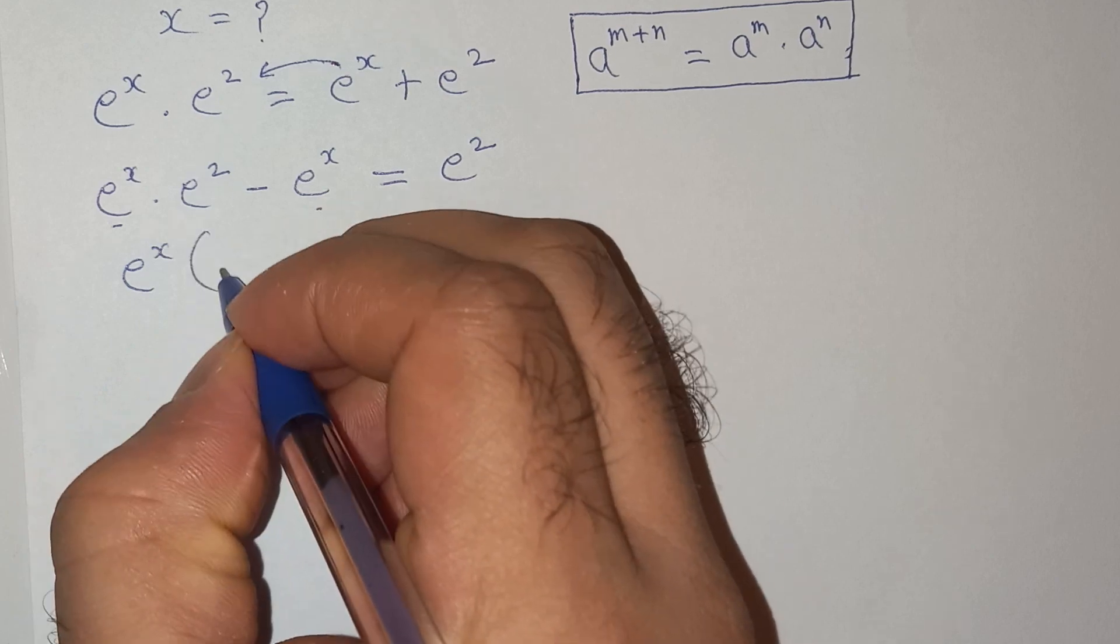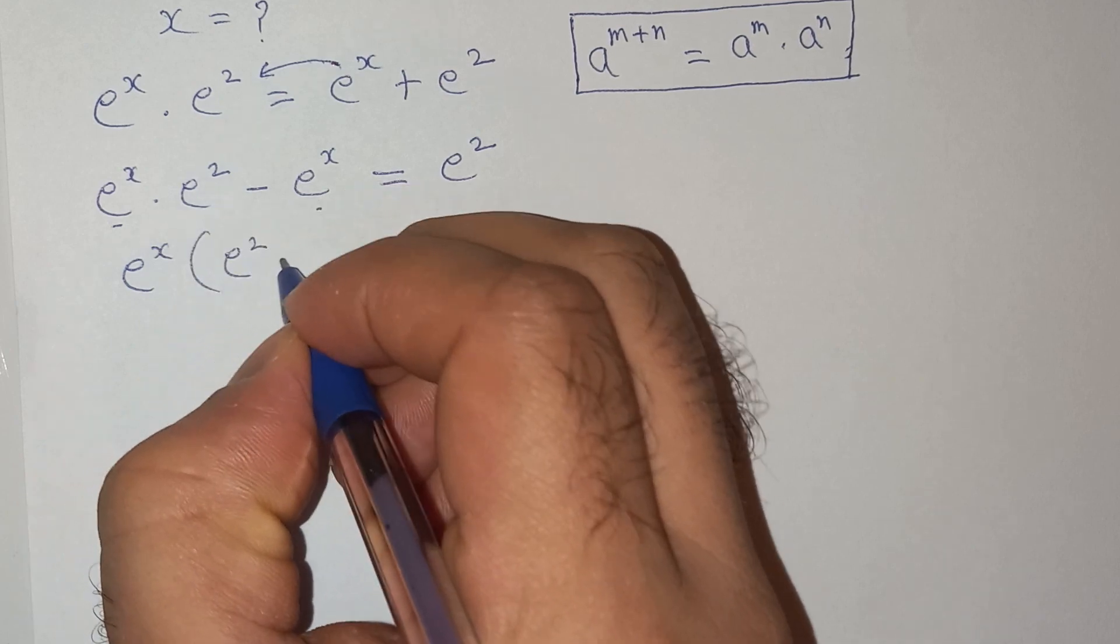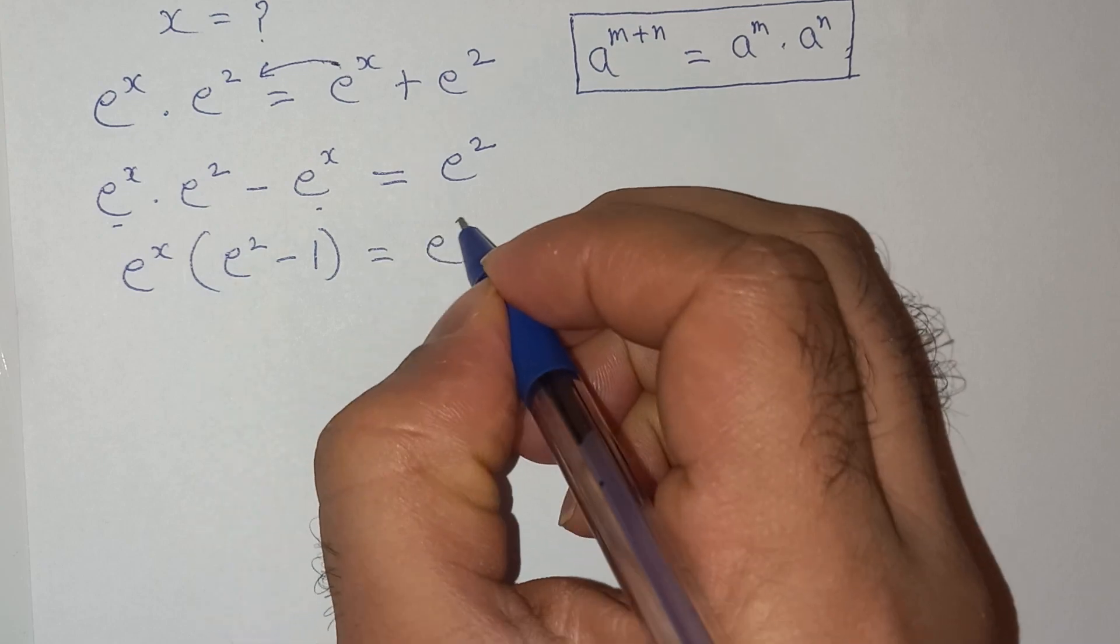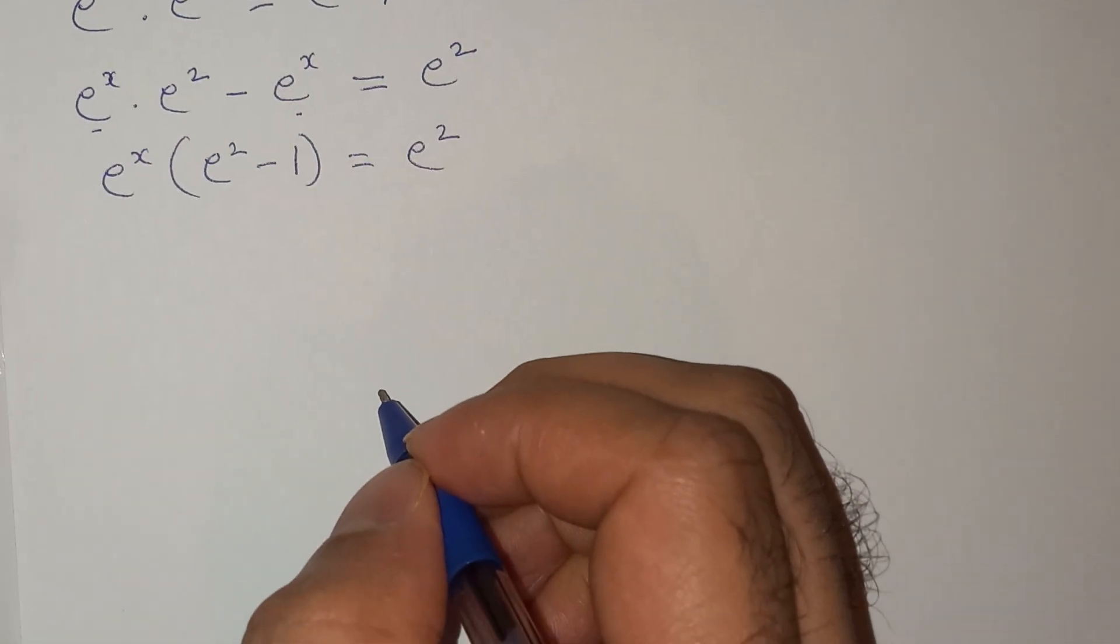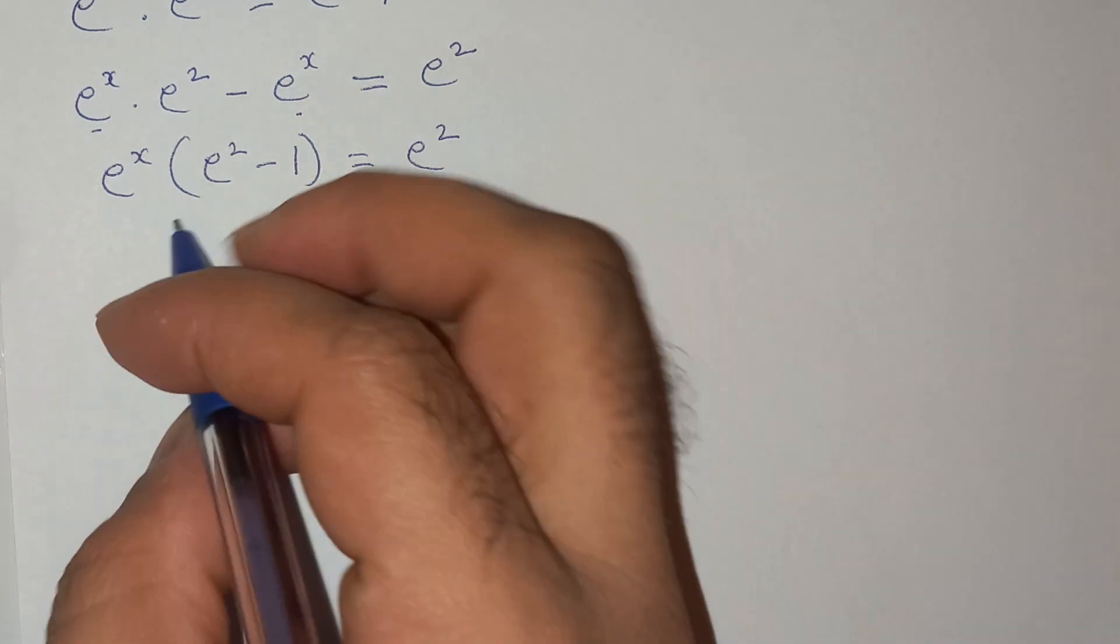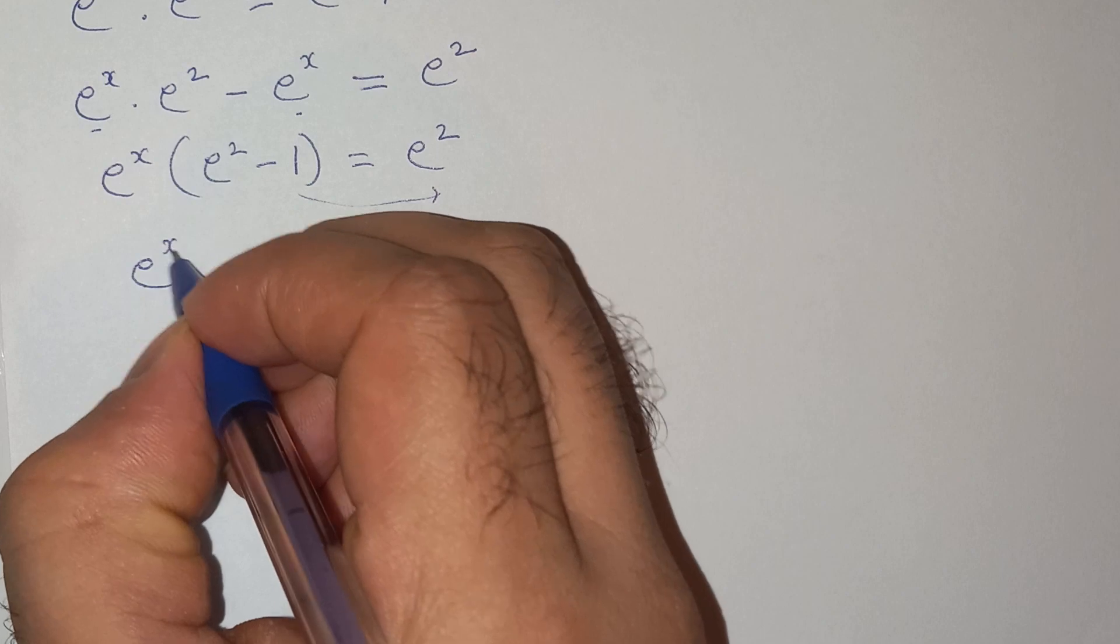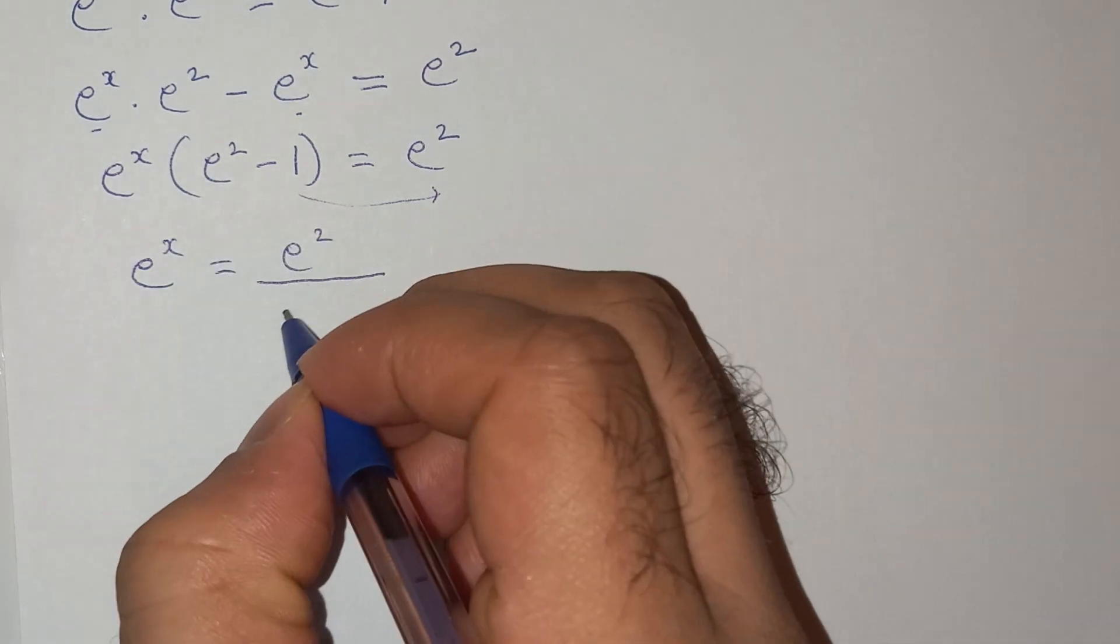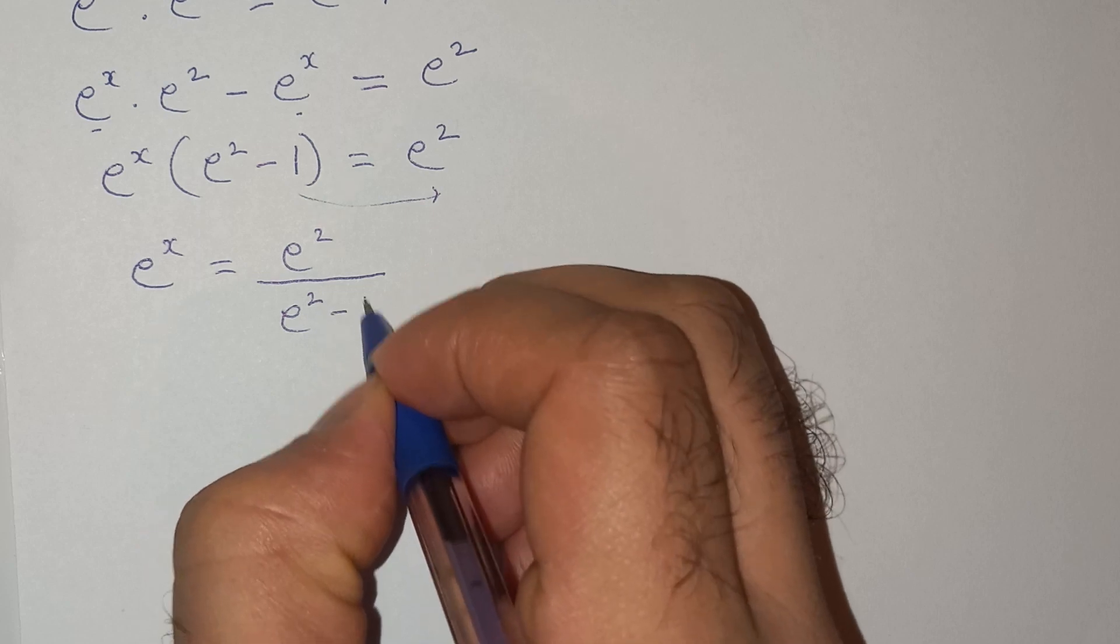E power x then this e square minus 1 equals to e square. Now let's take this e square minus 1 on the right hand side, so this will be e power x equals to e square divided by e square minus 1.